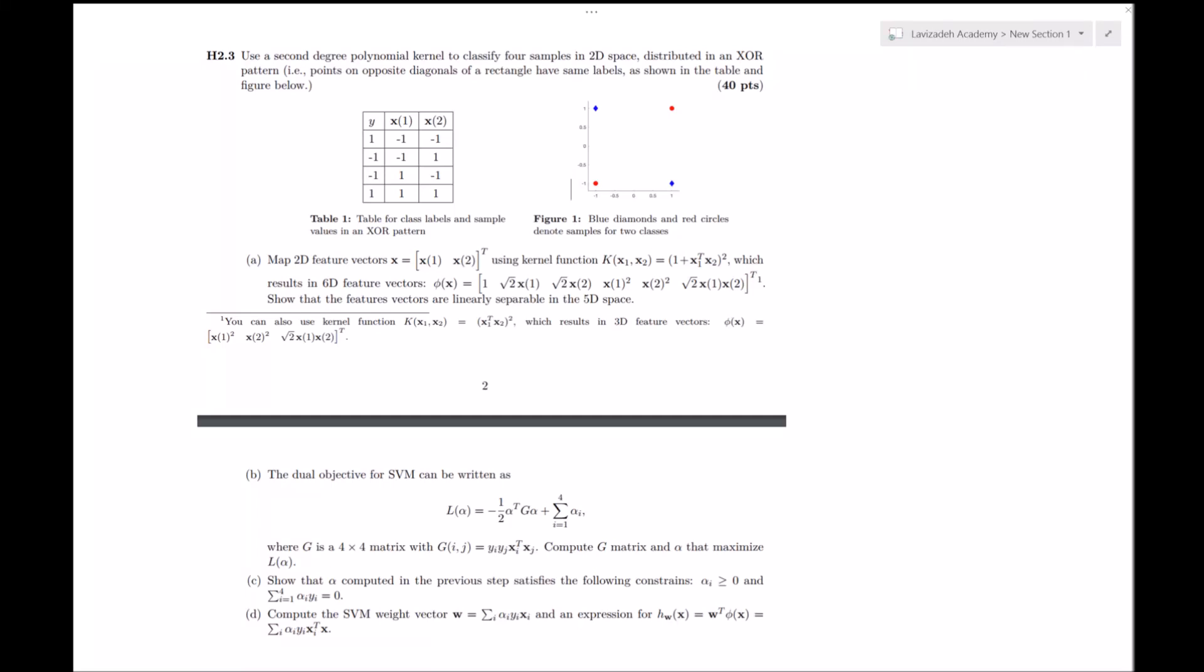Hello, so we're going to be solving this homework problem. Use a second degree polynomial kernel to classify four examples in 2D space distributed in an XOR pattern. So the idea is that if we want to have a linear perceptron to separate the data, we can't do it. There's no line that separates the data.